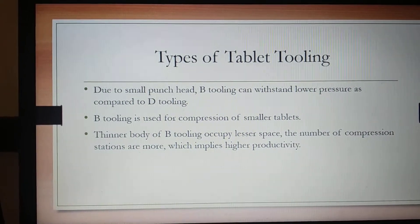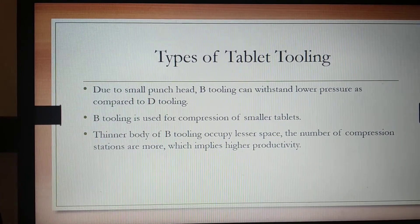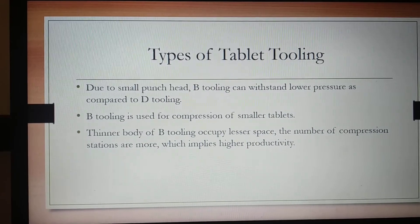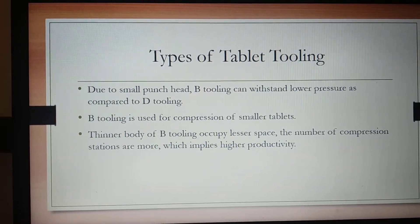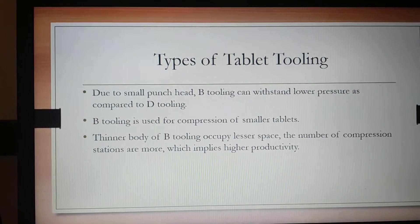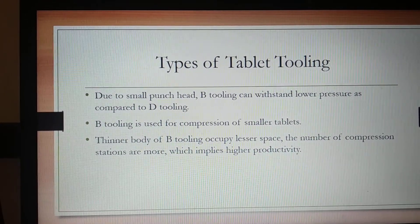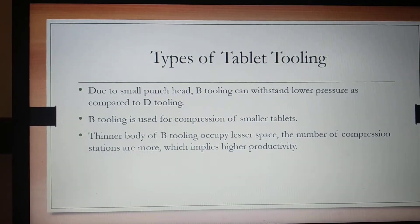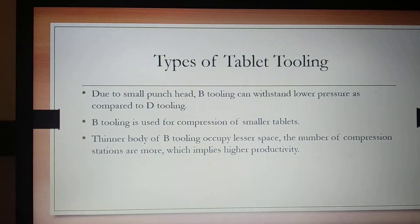Due to its small punch head, B tooling can be used for smaller tablets. B tooling can withstand lower pressure compared to D tooling, and therefore B tooling is used for compression of smaller tablets.